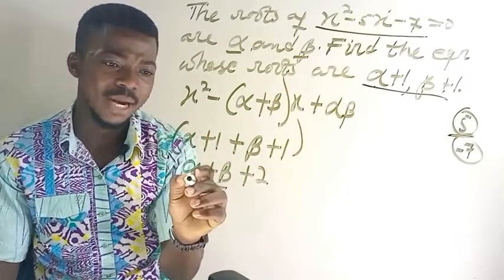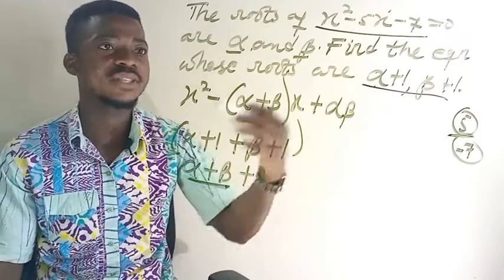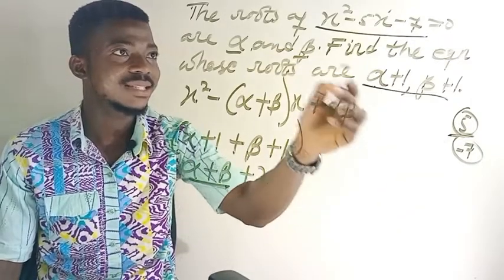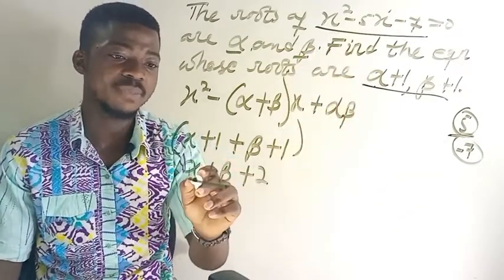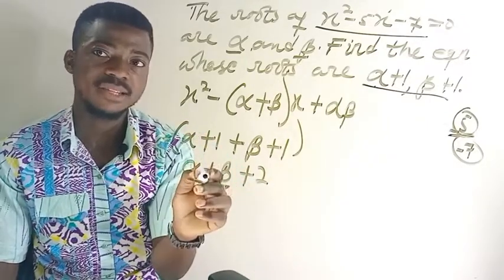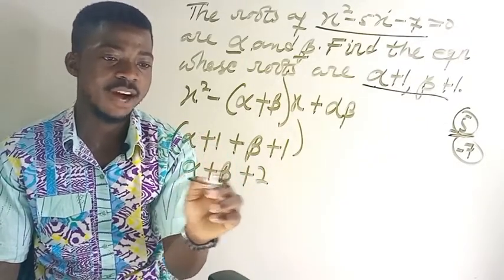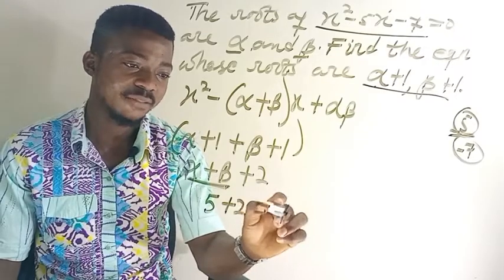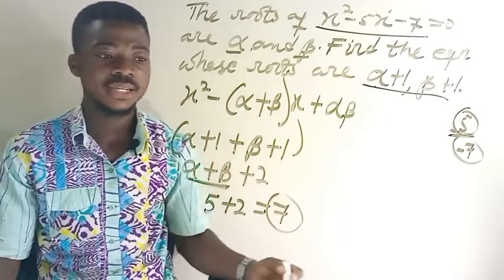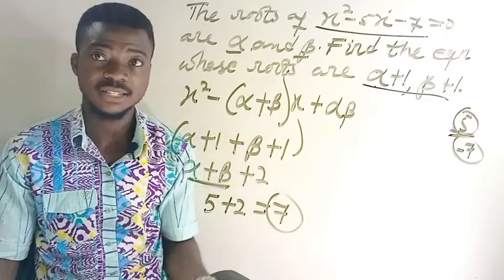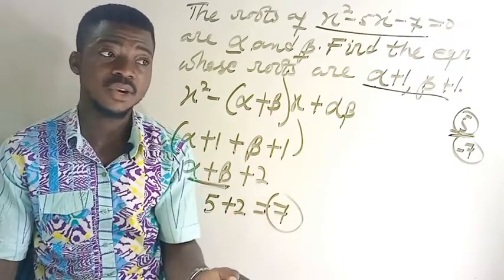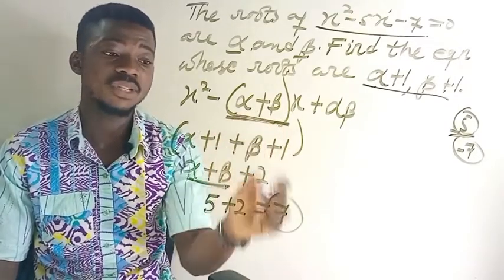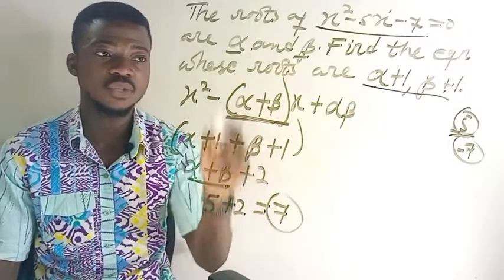We use the sum of the roots of the first equation — which we found to be 5 — and substitute it in place of α+β. So the sum of the roots of the new equation is 5 + 2 = 7. We will place this value into our control equation.